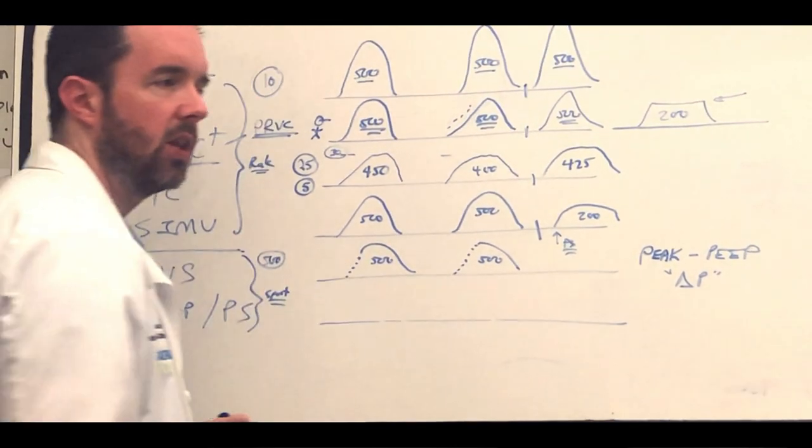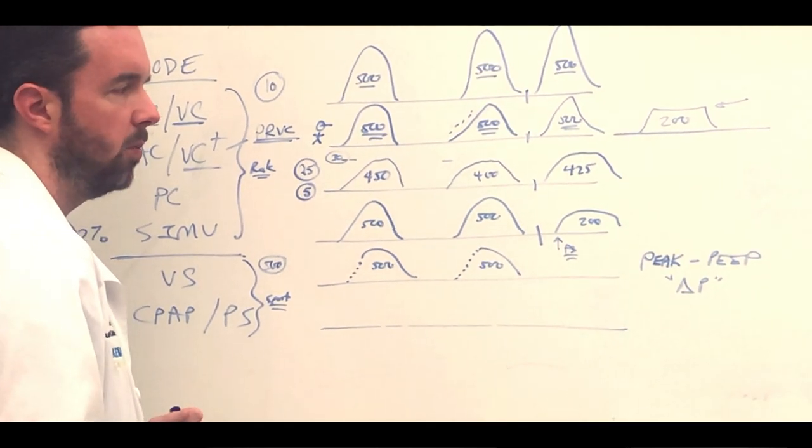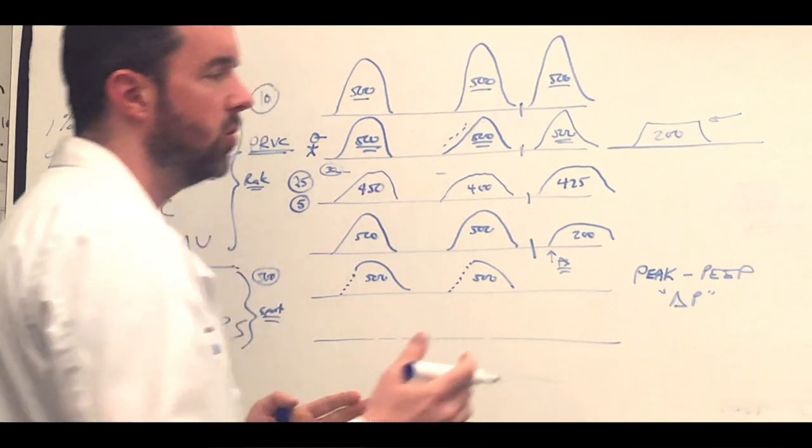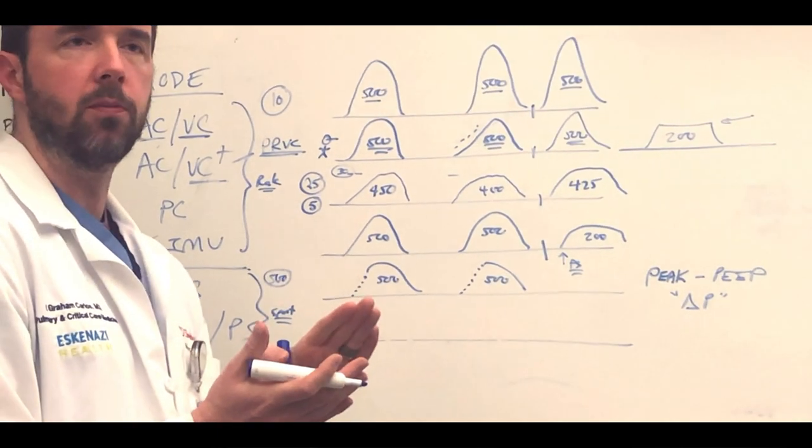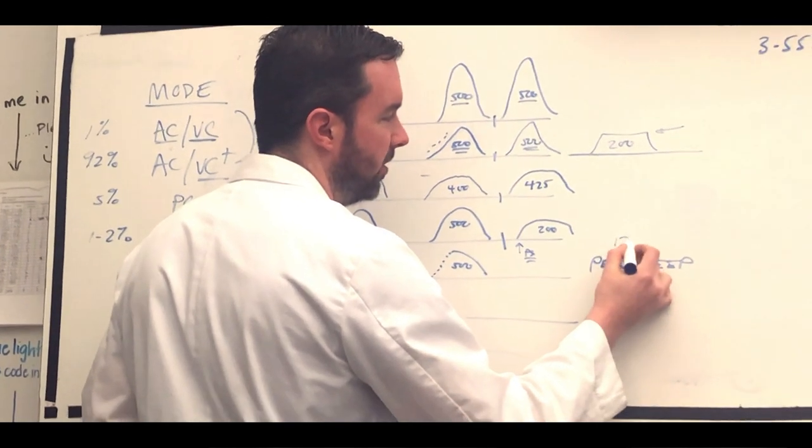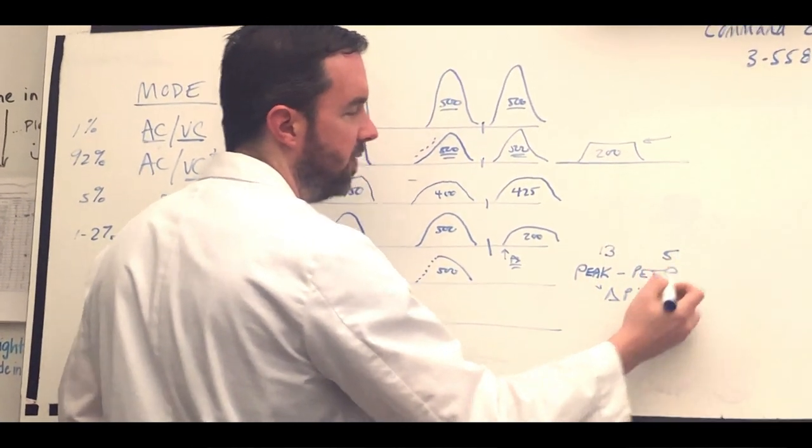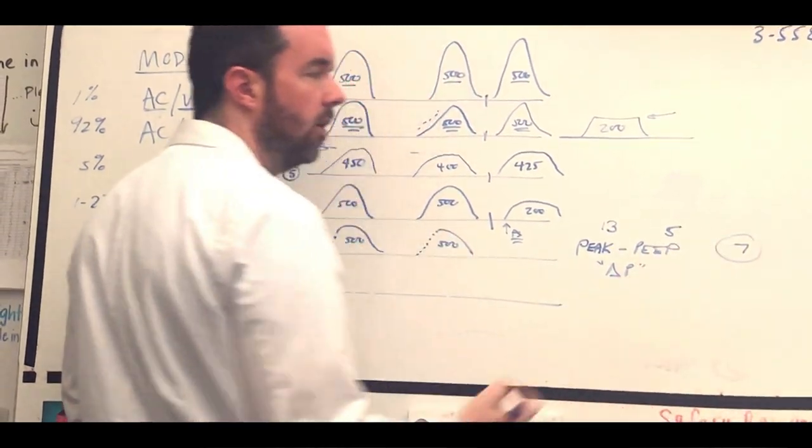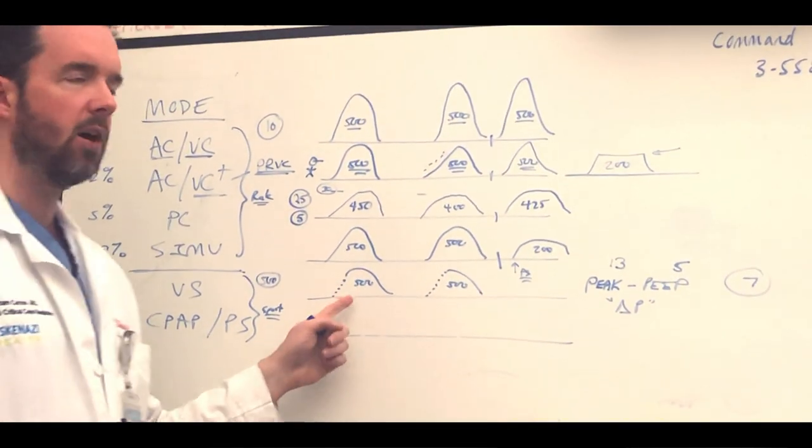On volume support, you'll notice as you use volume support more and more, as the patients are improving, that delta shrinks for you. That delta P. Let's say the peak pressure in a given patient was like 13 and the PEEP for example was 5. That tells me that they're needing about 7 of pressure from the vent to get a tidal volume of 500.